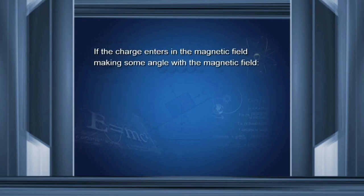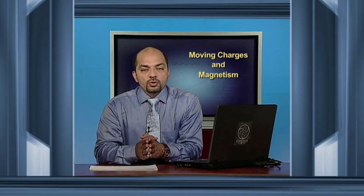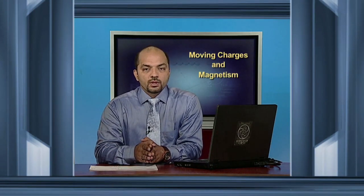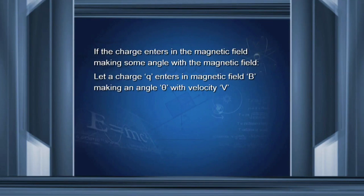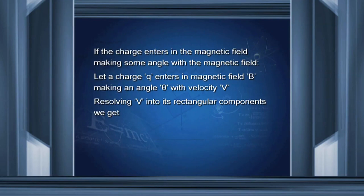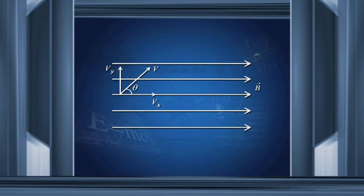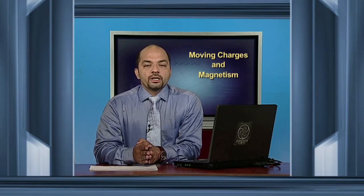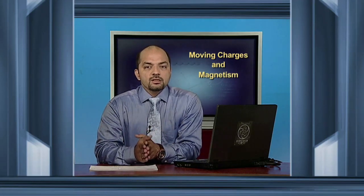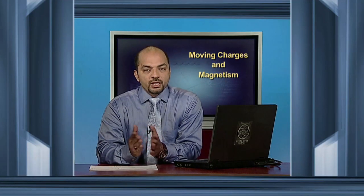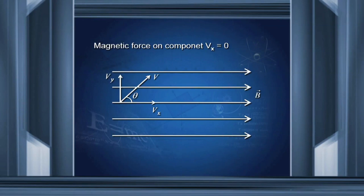If the charge enters the magnetic field B making some angle theta, then it experiences some force. Resolving its velocity V into rectangular components, we get Vx equals V cos theta and Vy equals V sin theta, as clearly shown in the diagram. The magnetic force on component Vx: since Vx is parallel to the magnetic field B, force F equals Q into Vx cross B equals zero. So the magnetic force on component Vx will be zero.